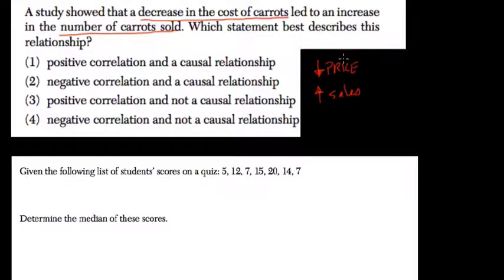This is called a negative correlation. The two variables change in different directions—one's going down and the other's going up.